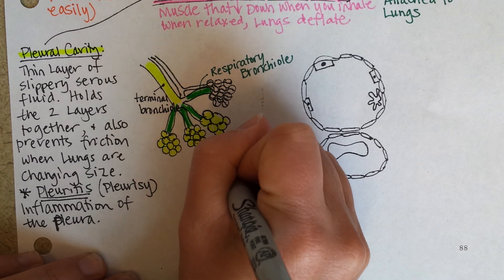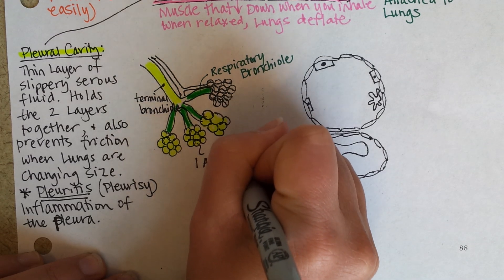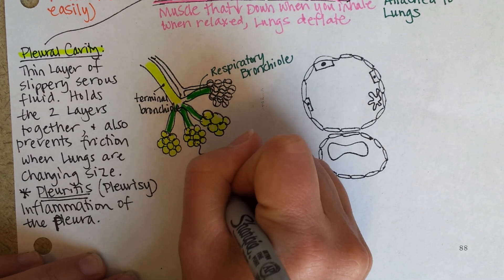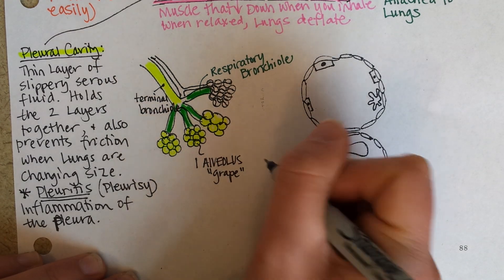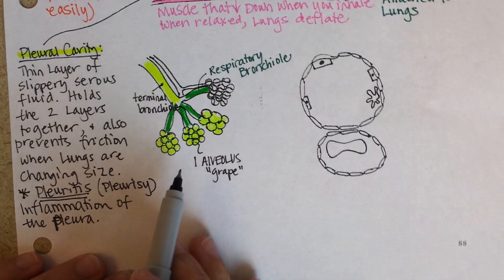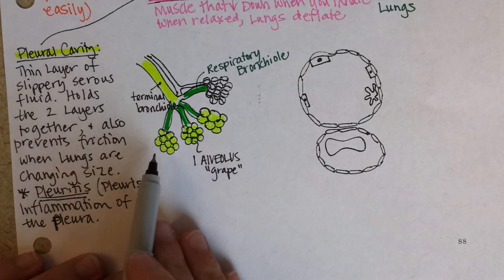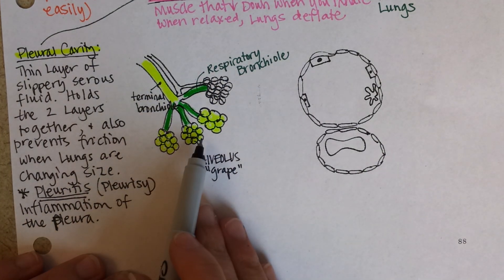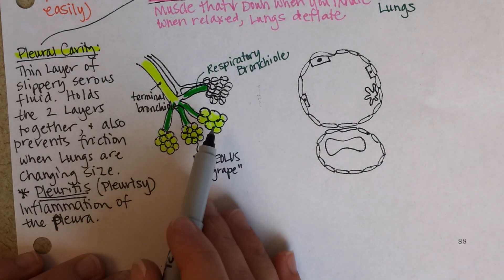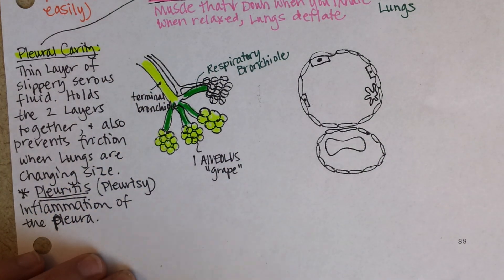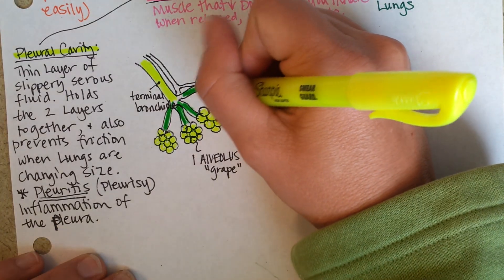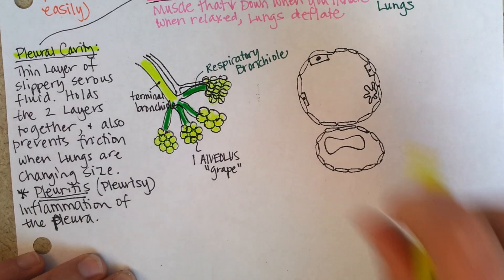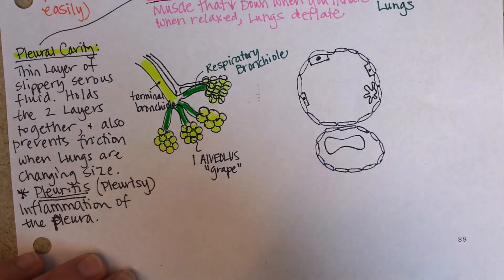So that's one alveolus, and that word means grape. You can see you have clusters of alveoli that are the location of gas exchange — this is where the excitement happens.